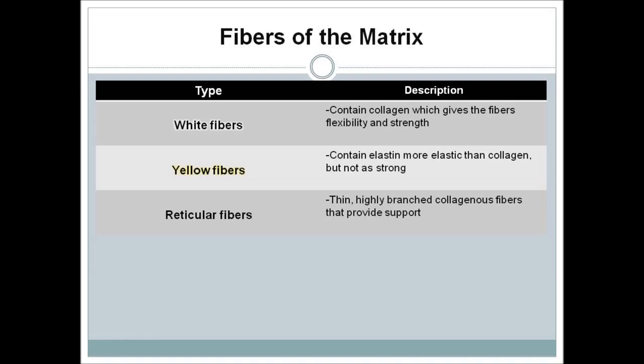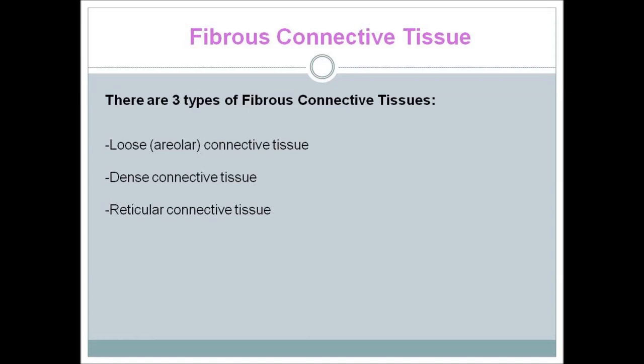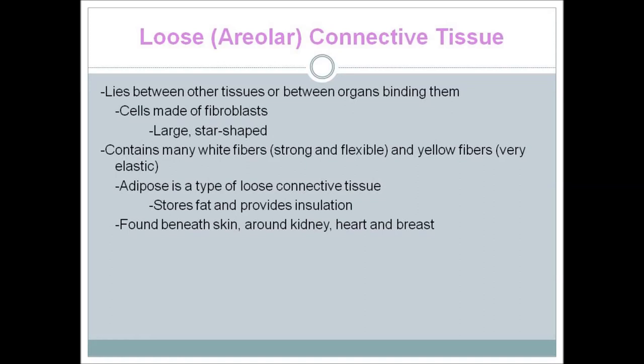There are three types of fibrous connective tissues: loose areolar connective tissue, dense connective tissue, and reticular connective tissue. Loose areolar connective tissue lies between other tissues or organs, binding them together. Its cells are made of fibroblasts, which are large and star-shaped, and it contains many white and yellow fibers.